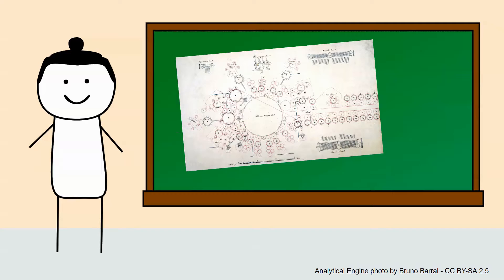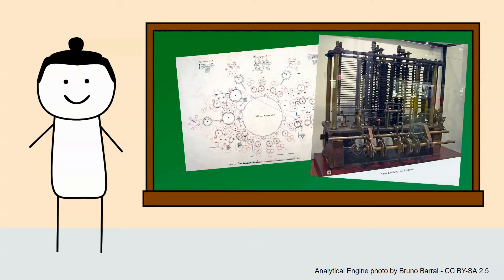One of Babbage's inventions was the concept of a mechanical computer called the Analytical Engine. An article was written in French about his work, and Babbage asked Ada to translate it into English so that it could be published in England.